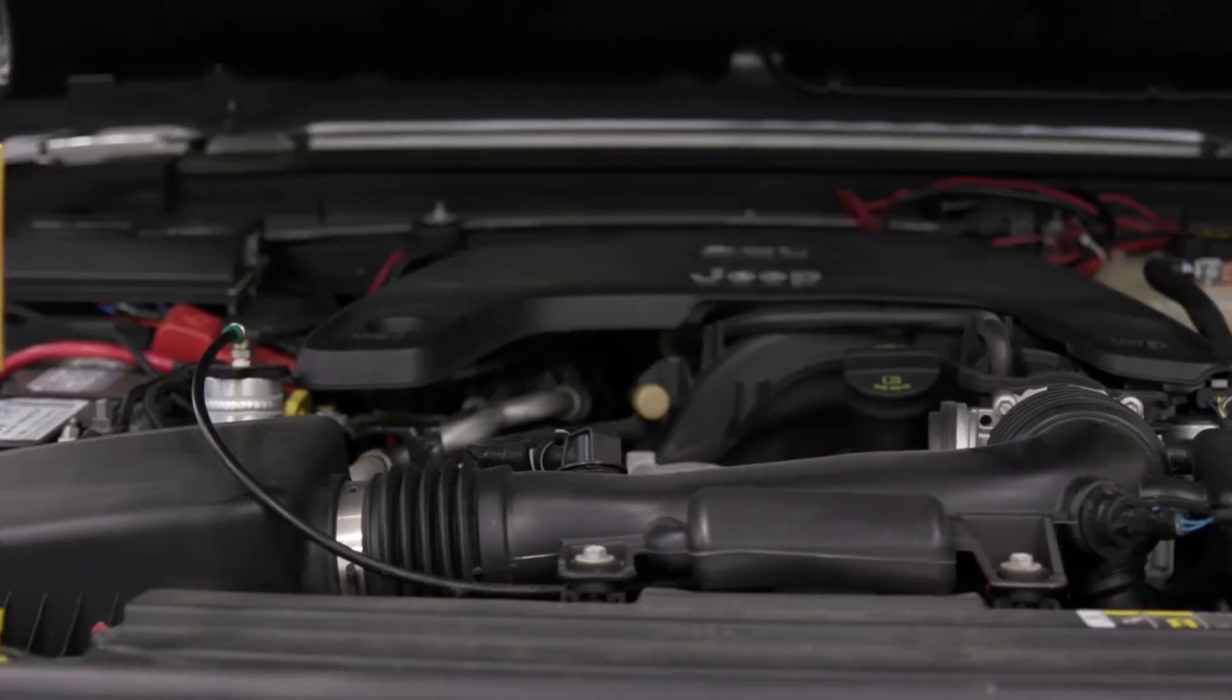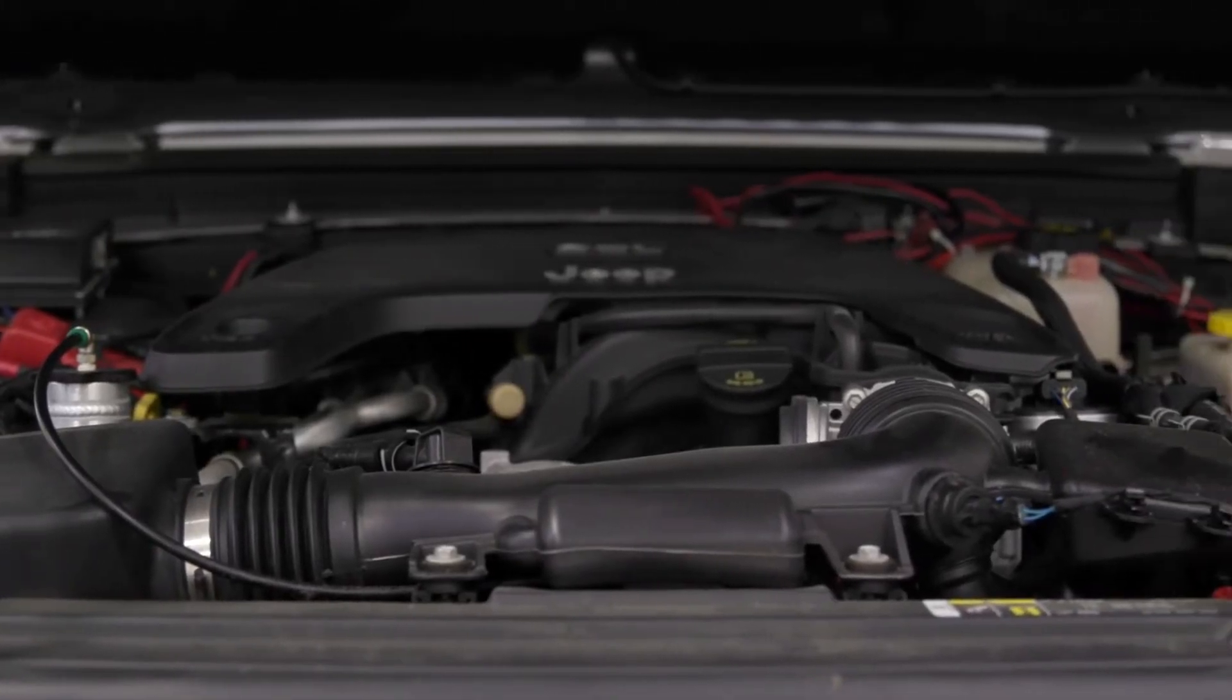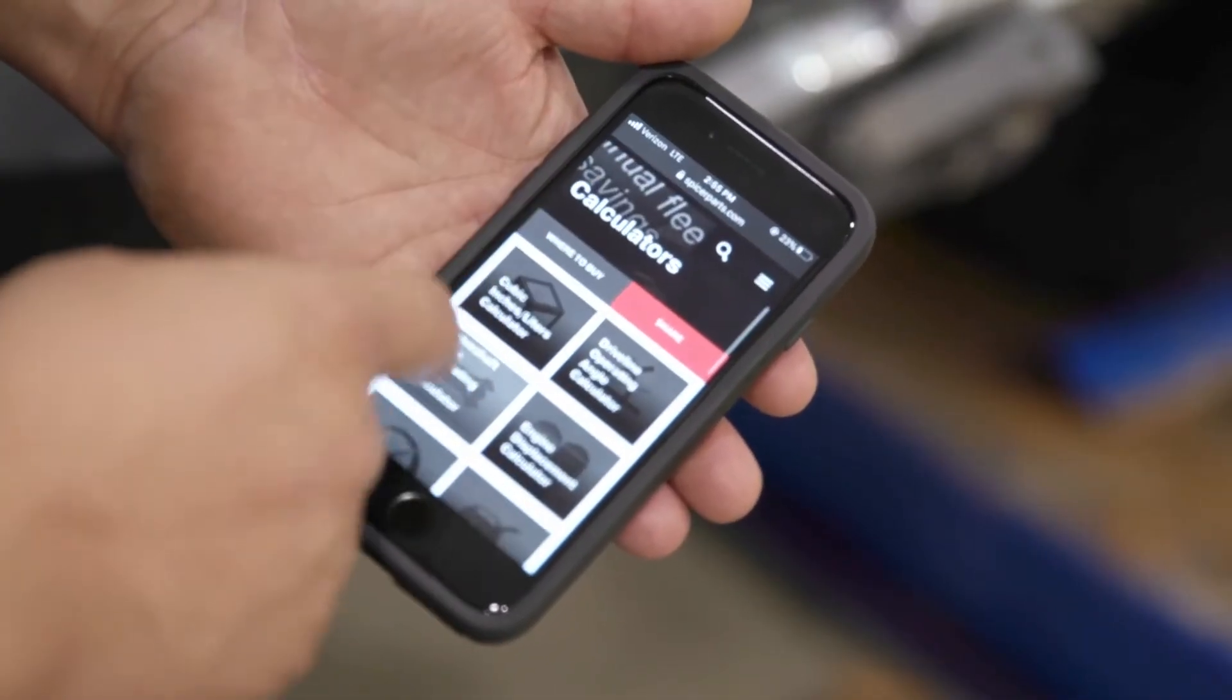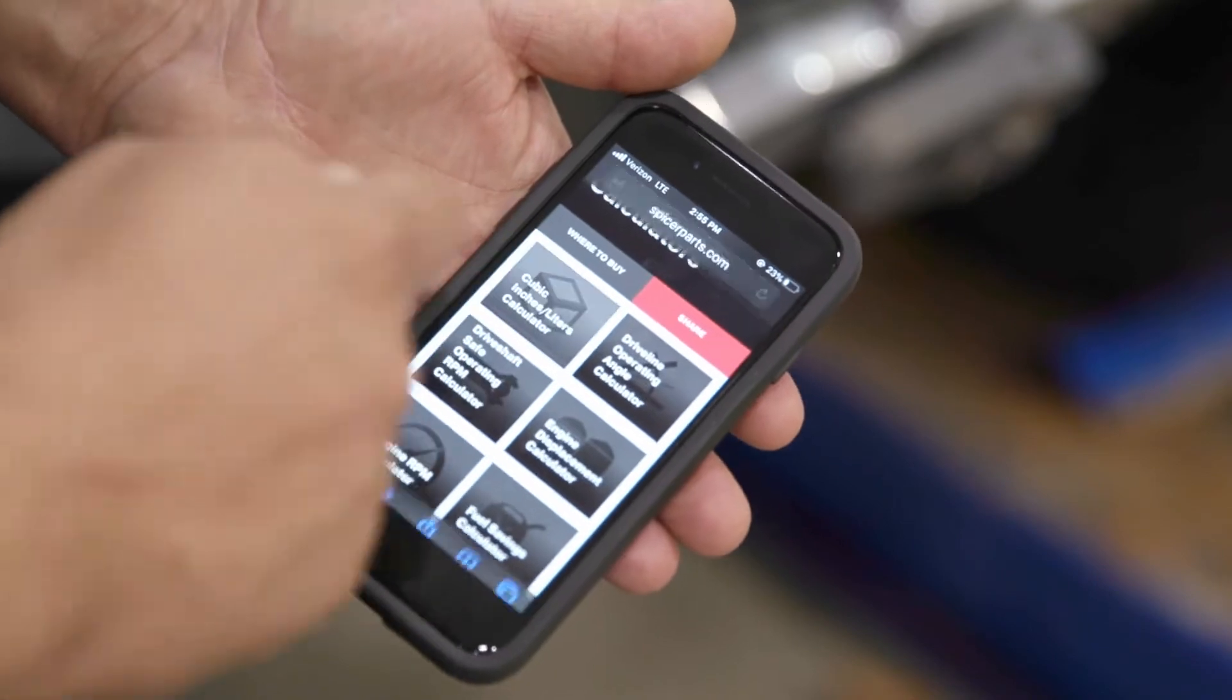The next calculator we're going to discuss allows you to convert cubic inches into liters of displacement when we're talking about the size of an engine. So if we want to talk about this Jeep right here, we'll open up the calculator. We're going to go to the calculators page and go into the cubic inches to liters calculator.